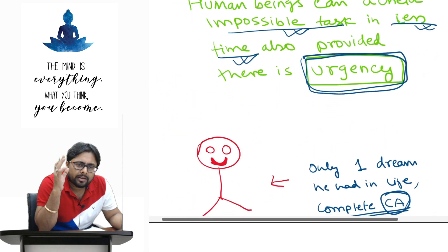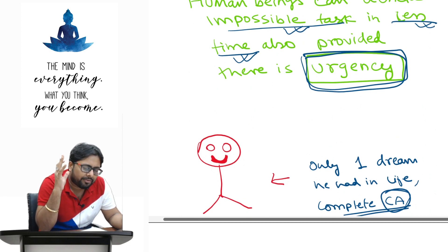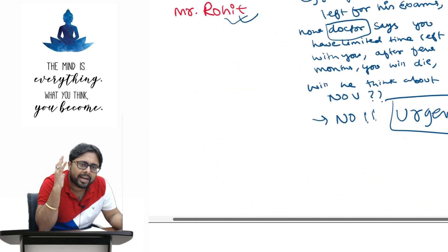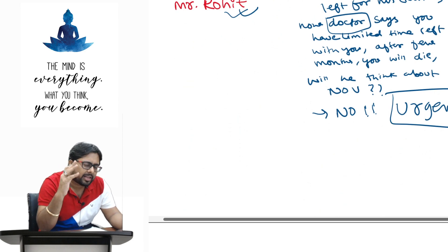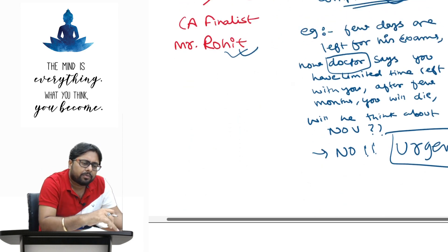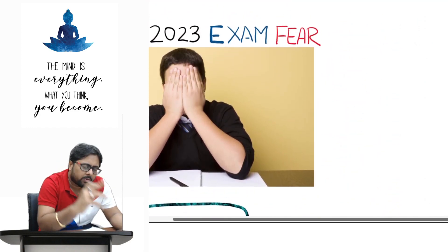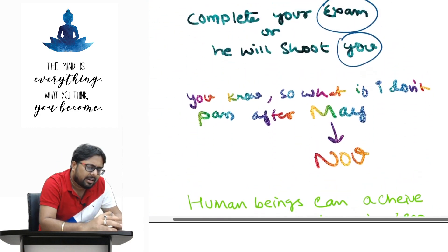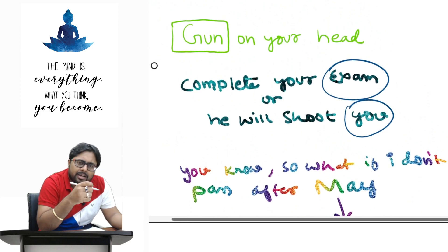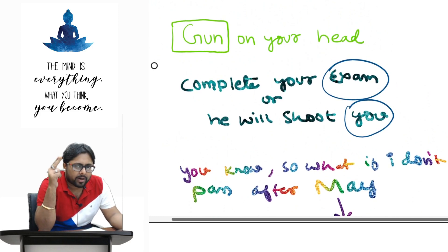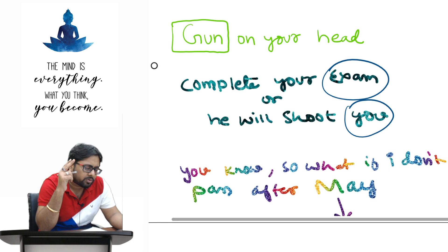So, do not worry. Find out your why. Find out if your why is strong enough and if that why is strong enough, there would not be any fear. There would not be anything that will be disturbing you, that will be diverting you. Understand, very simple in this case where there is a gun on the head. You study or I shoot you.